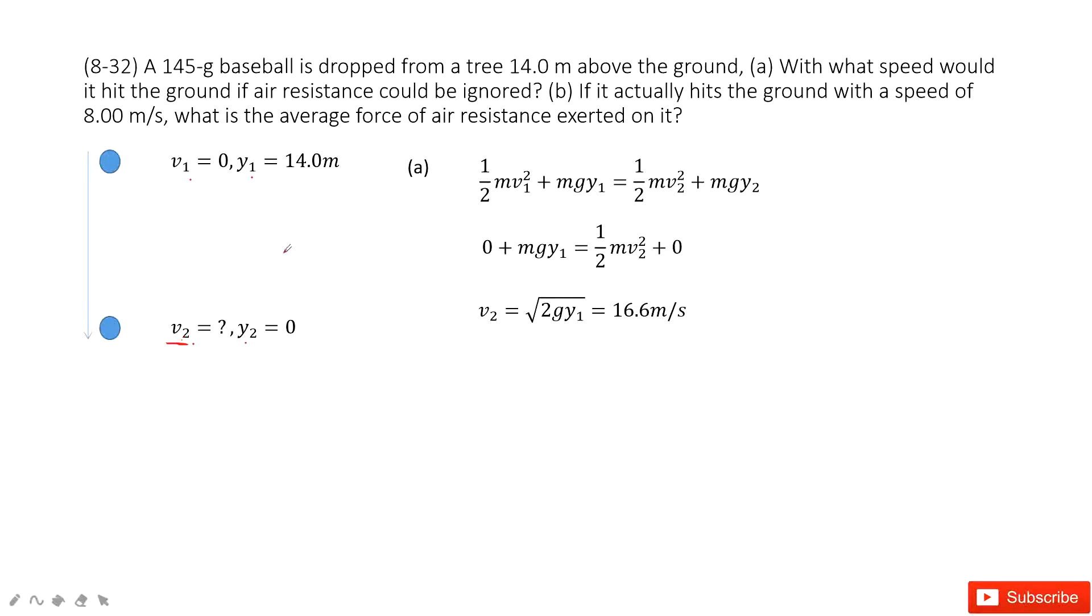So we consider the initial energy: the initial kinetic energy plus initial potential energy equals the final kinetic energy plus final potential energy. And then we input the known quantities. We can get V2 very easily. It's around 16 meters per second.